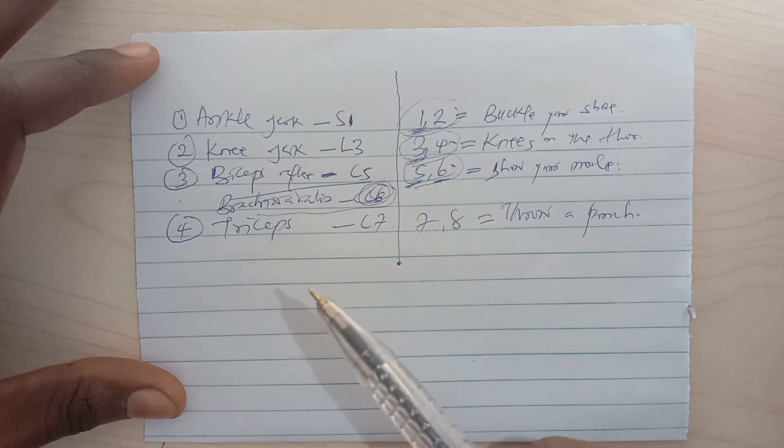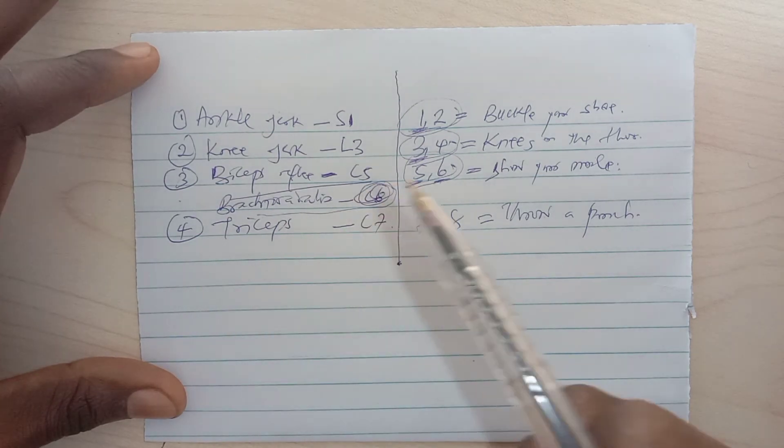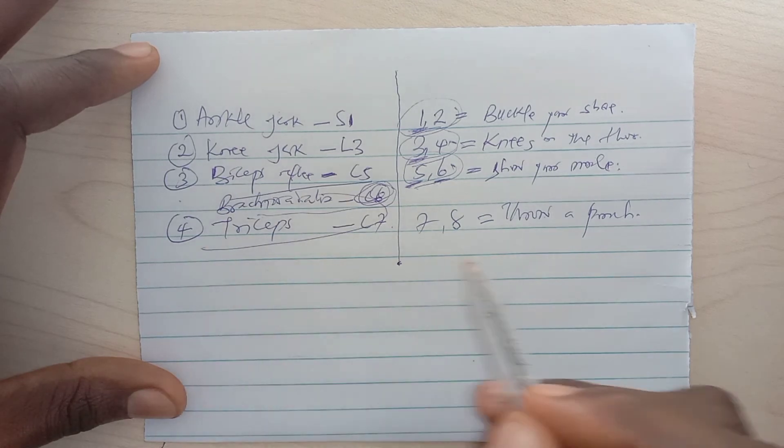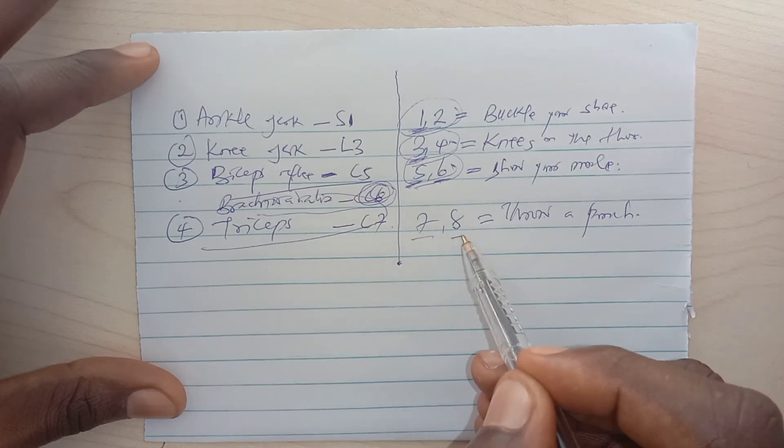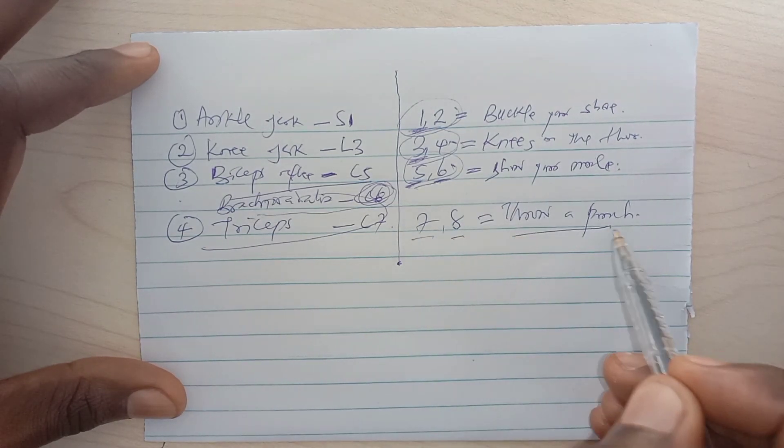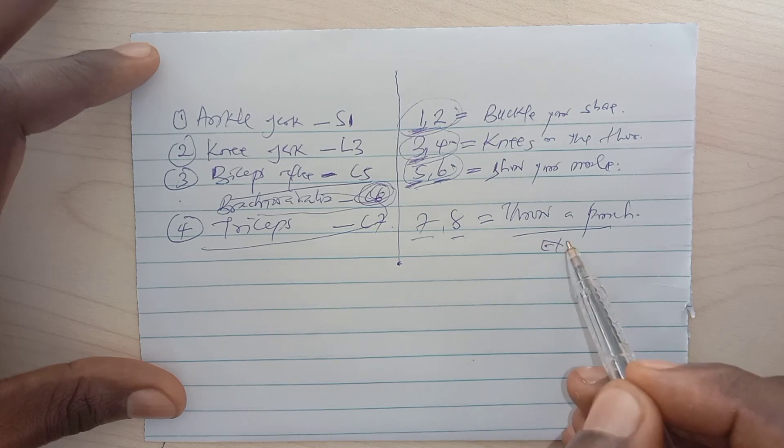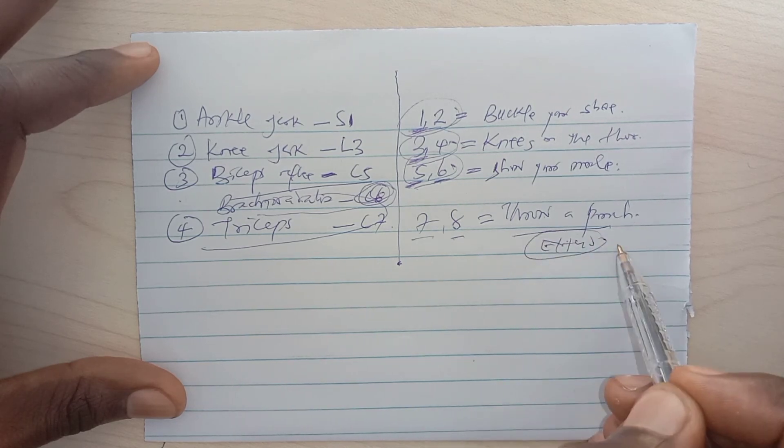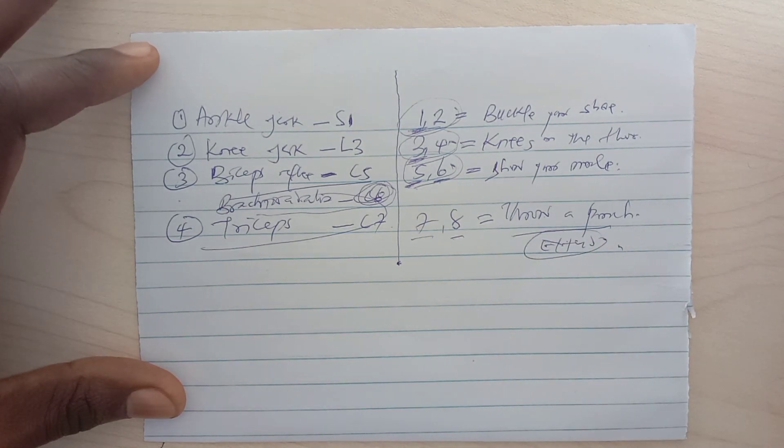turn so you see the brachioradialis also as you see your bicep bulging. Then the tricep C7-C8, you throw a punch. You have to extend the elbow to throw a punch, and that's it.